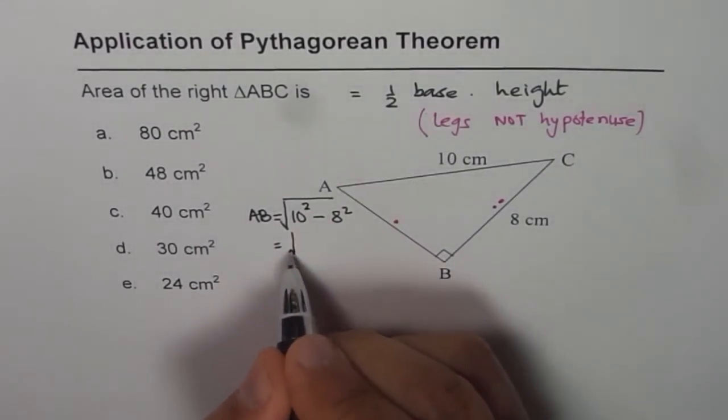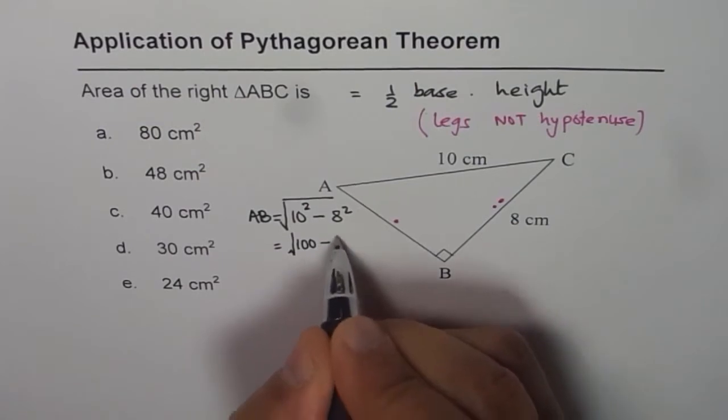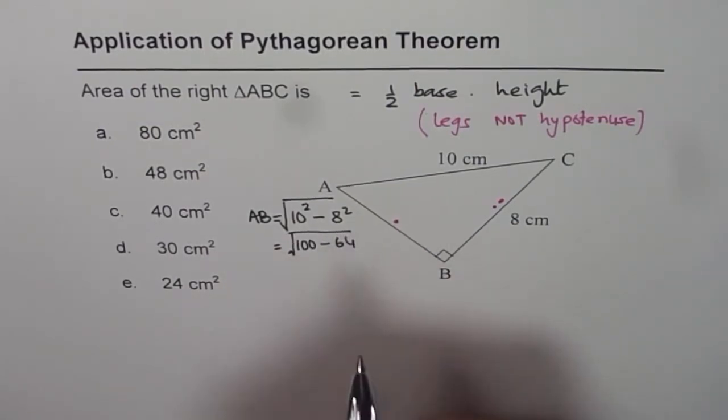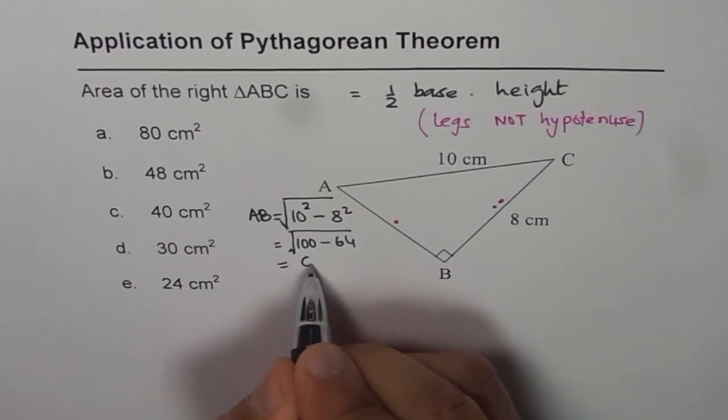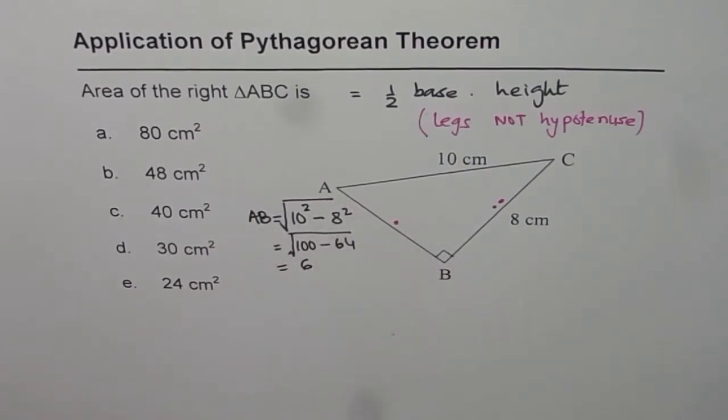Now you can calculate this which is square root of 100 minus 64, that is 36, which gives you 6. So we get AB as 6.